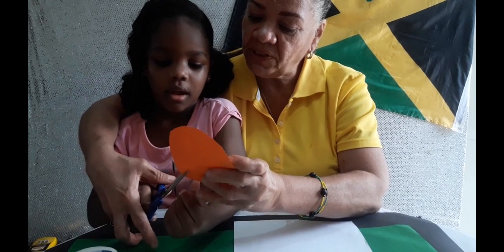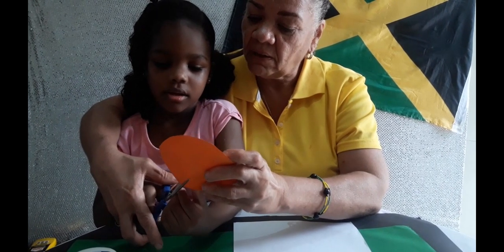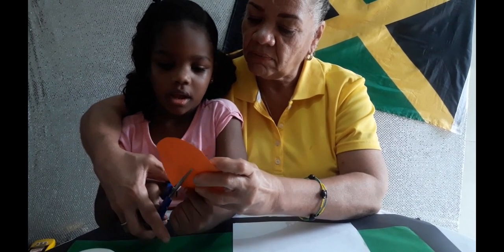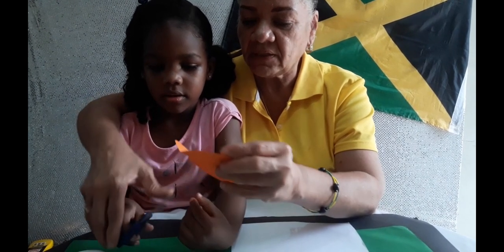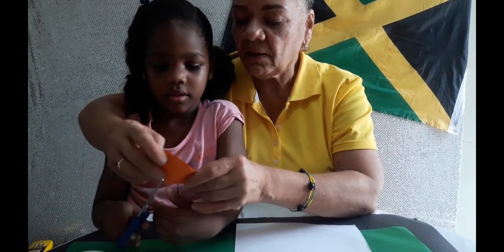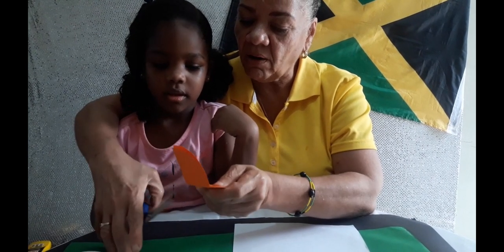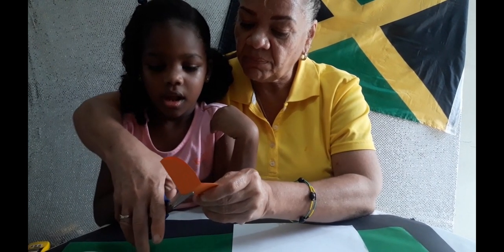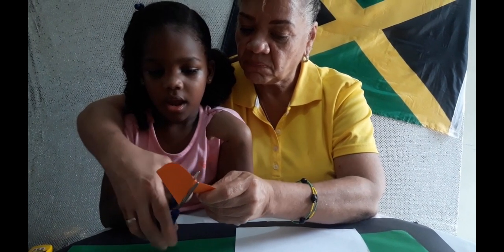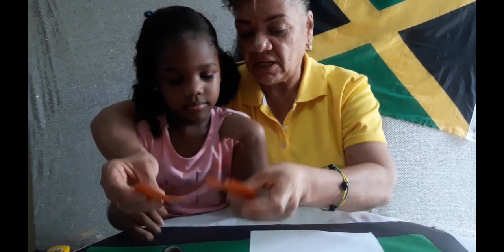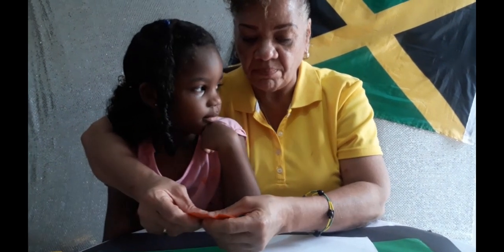Now we're going to cut this into quarters. Open wide. Open the scissors nice and wide. That's it. And put it together. Make another cut. That will be our quarter. That's it. Four equal pieces.